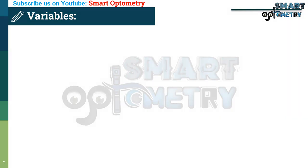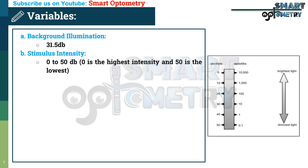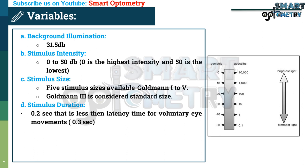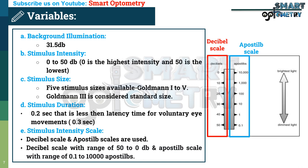Now let's see the variables of automated perimeters. Background illumination is 31.5 apostilbs. Stimulus intensity ranges from 0 to 50 decibels — 0 is the highest intensity and 50 is the lowest intensity, meaning lower numbers indicate higher intensity of light and higher numbers indicate lower intensity of light. Stimulus size: there are 5 sizes — Goldmann 1, 2, 3, 4, and 5 — with Goldmann 3 considered the standard size. Stimulus duration is 0.2 seconds, which is less than the latency time for voluntary eye movements. The decibel scale ranges from 50 to 0 decibels and the apostilb scale ranges from 0.1 to 10,000 apostilbs.